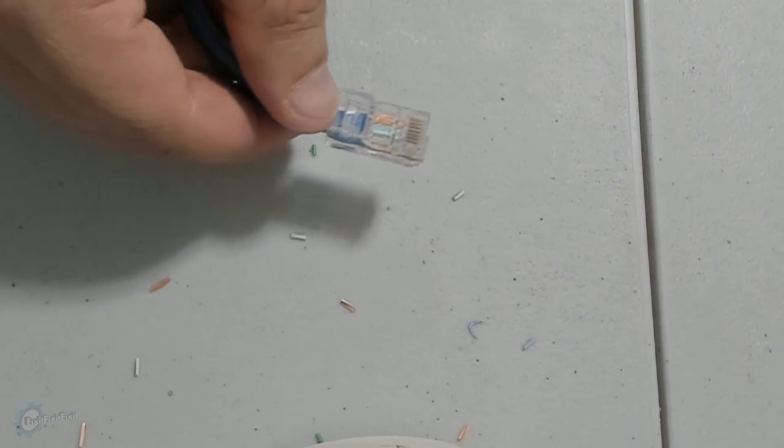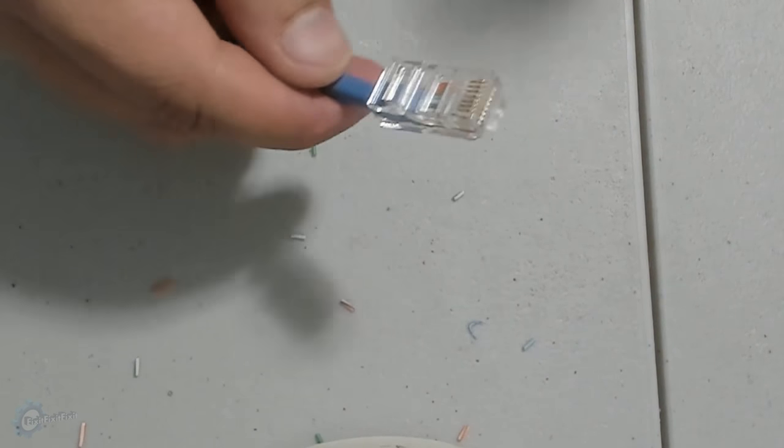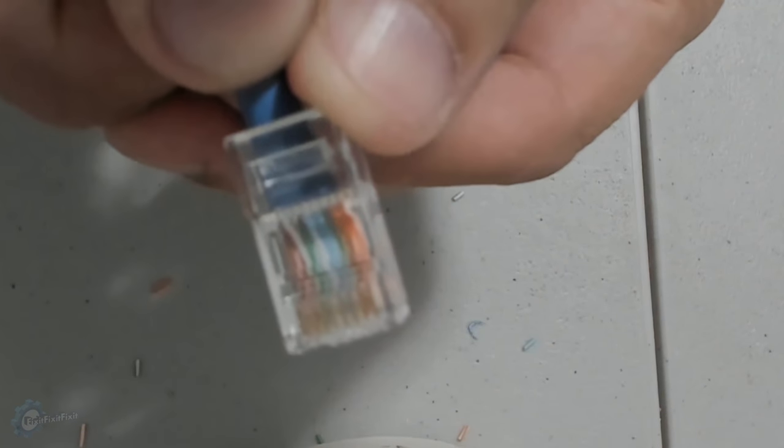Typically, the crimper will either unlock itself or make a noticeable popping sound when you have crimped the wire.